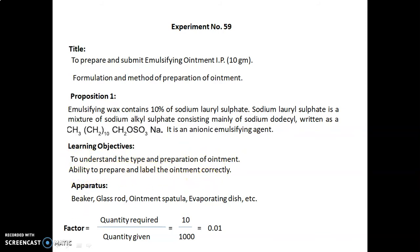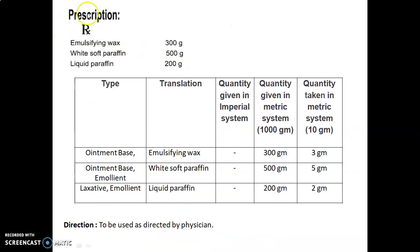Apparatus required are beaker, glass rod, ointment spatula, and evaporating dish. Factor calculated as quantity required upon quantity given equals 10/1000 = 0.01. Prescription (Rx): emulsifying wax 300g, white soft paraffin 500g, liquid paraffin 200g.